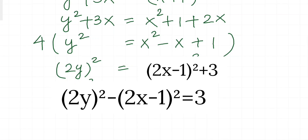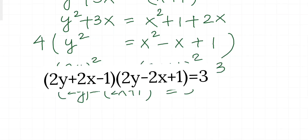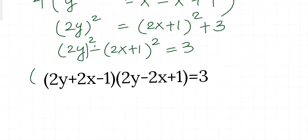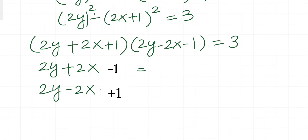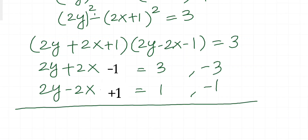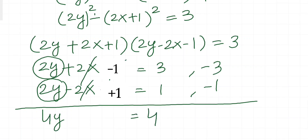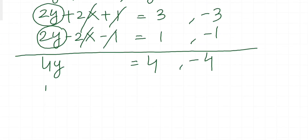Multiplying both sides by 4 gives 4y² = (2x + 1)² + 3 — exactly the same structure as before. Using the difference of squares: (2y + 2x + 1)(2y - 2x - 1) = 3. The possible combinations are 3 and 1, or -3 and -1. Adding them: the x terms cancel, giving 4y = ±4, so y = ±1.